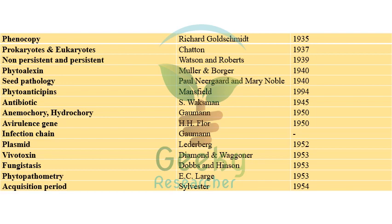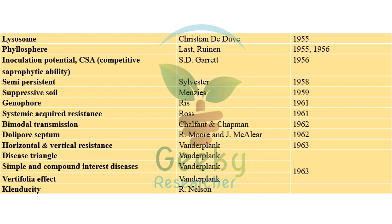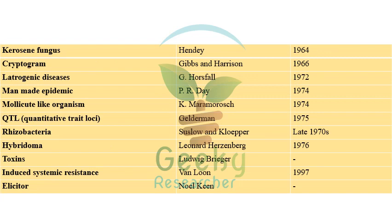'Avir­ulence gene' by HH Flor in 1950. 'Infection chain' by Gaumann. 'Plasmid' by Lederberg in 1952. 'Vivotoxin' by Diamond and Wagner in 1953. 'Fungistasis' by Dobbs and Hinson in 1953. 'Phytopathometry' by EC Large in 1953. 'Acquisition period' by Sylvester in 1954. 'Lysosome' by Christian de Duve in 1955. 'Phyllosphere' by Last and Ruinen in 1955–56. 'Inoculum potential' and 'competitive saprophytic capability' by SD Garrett in 1956. 'Semi-persistent' by Sylvester in 1958. 'Suppressive soil' by Menzies in 1959. 'Gene-for-gene' by Flor in 1961. 'Systemic acquired resistance' by Ross in 1961. 'Bimodal transmission' by Chalfant and Chapman in 1962. 'Dolipore septum' by Moore and Mccalier in 1962. 'Horizontal and vertical resistance' by Van der Plank in 1963.